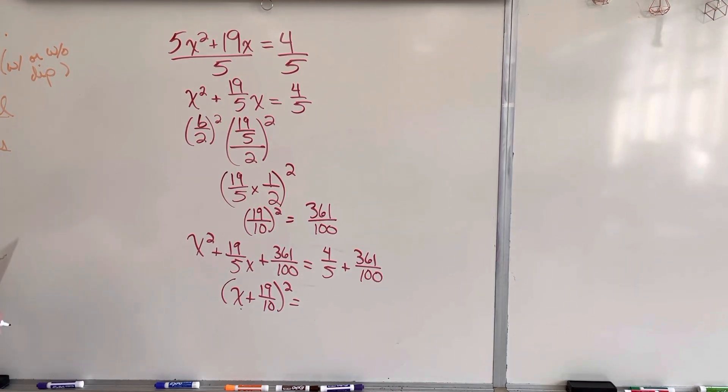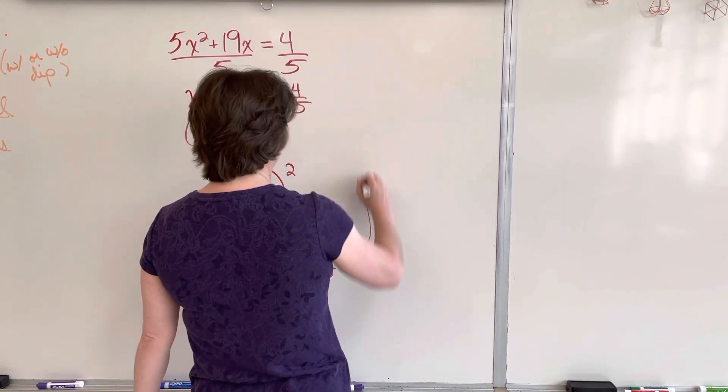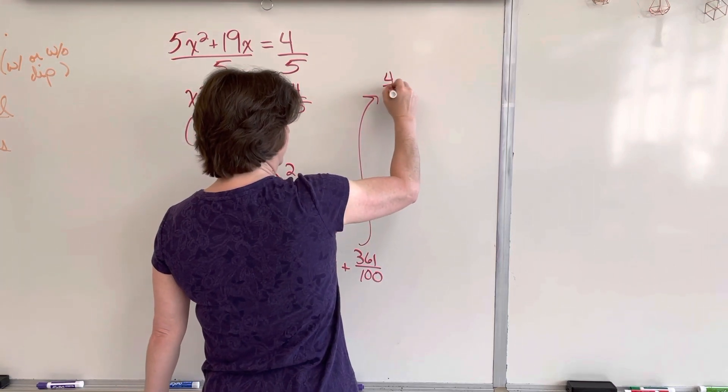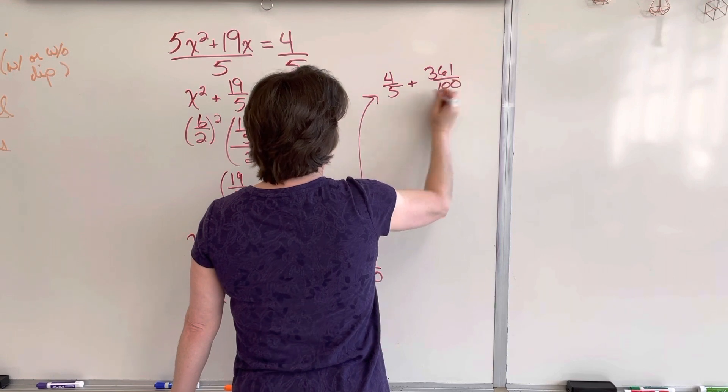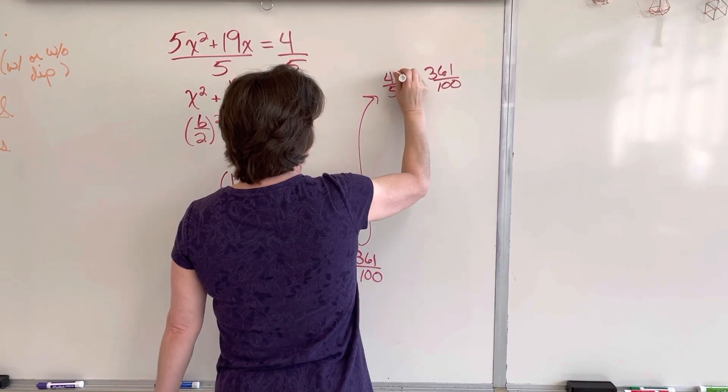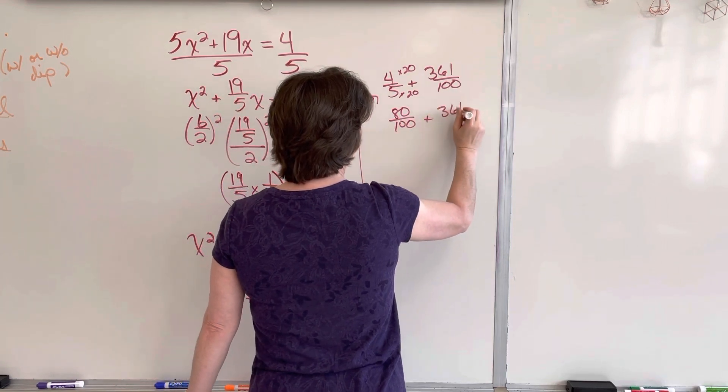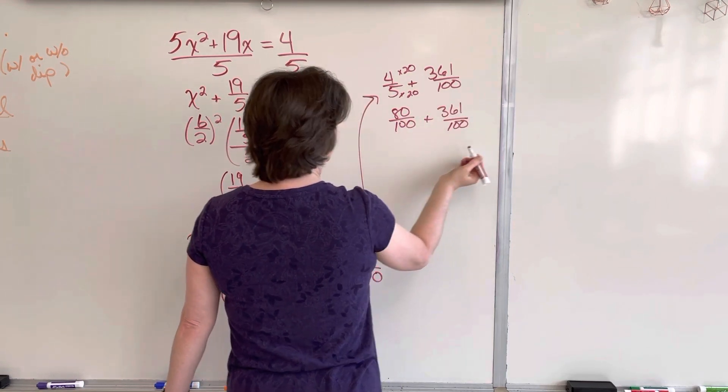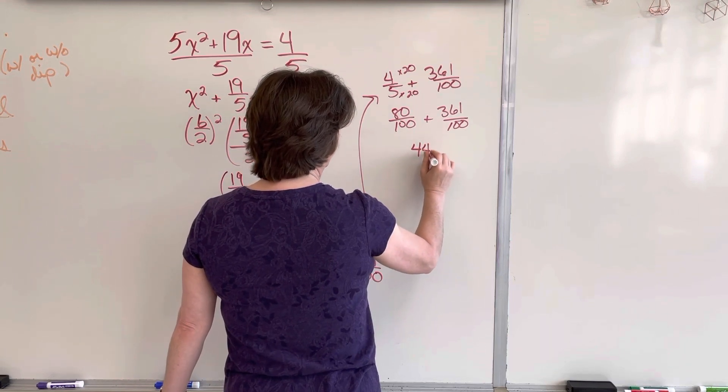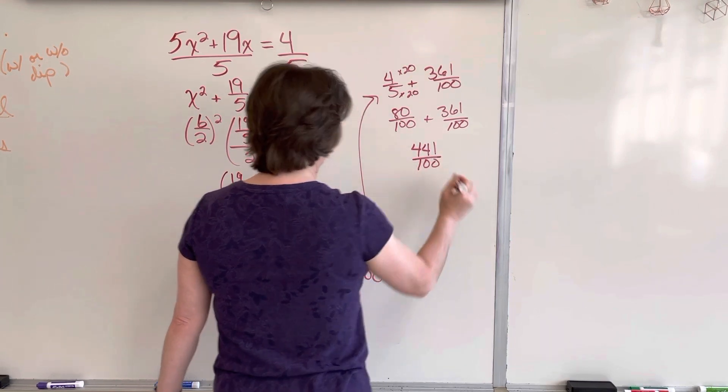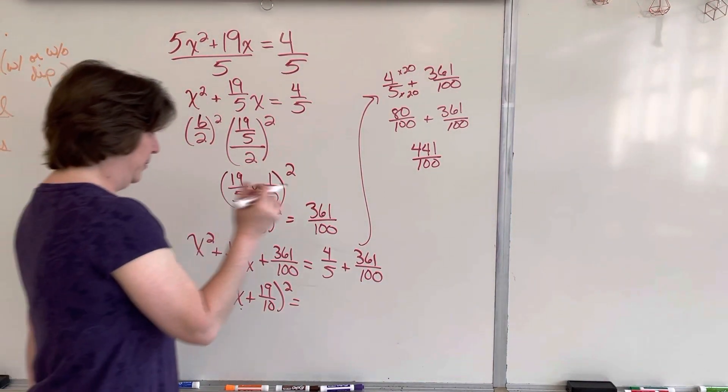Now, that side you need to do the math. 4 fifths plus 361 over 100. I need a common denominator of 100. That's 80 over 100 plus 361 over 100. So that gives me 441 over 100. If things work up nicely, this is going to be a perfect square.